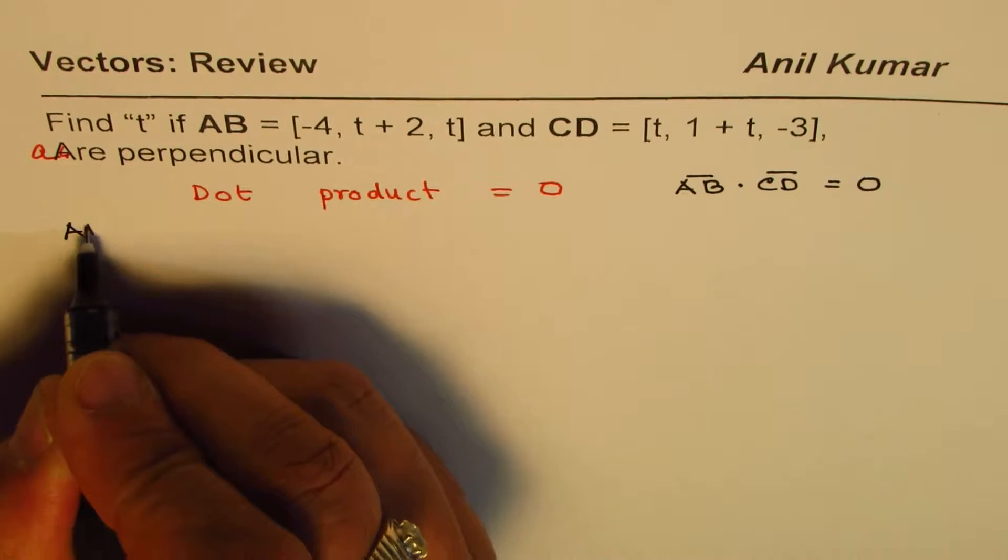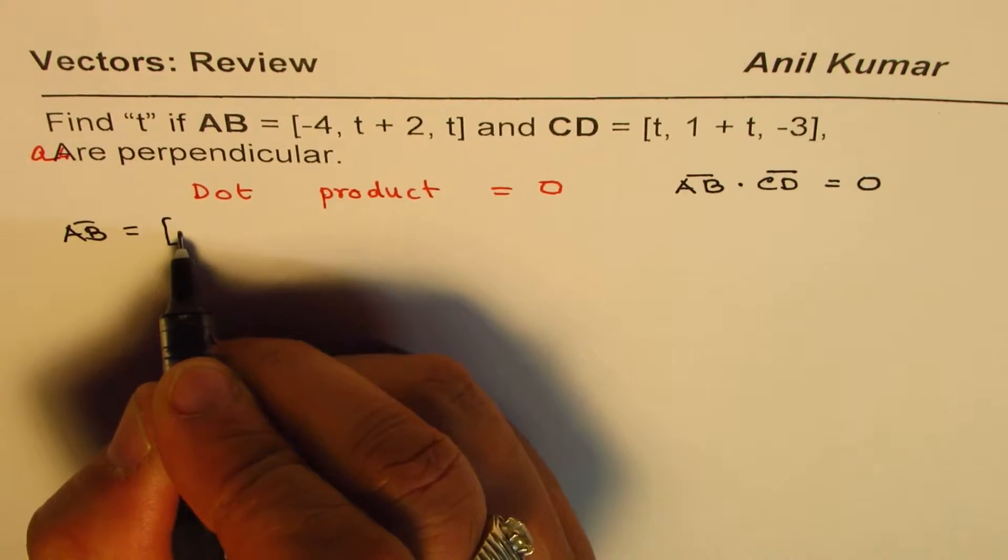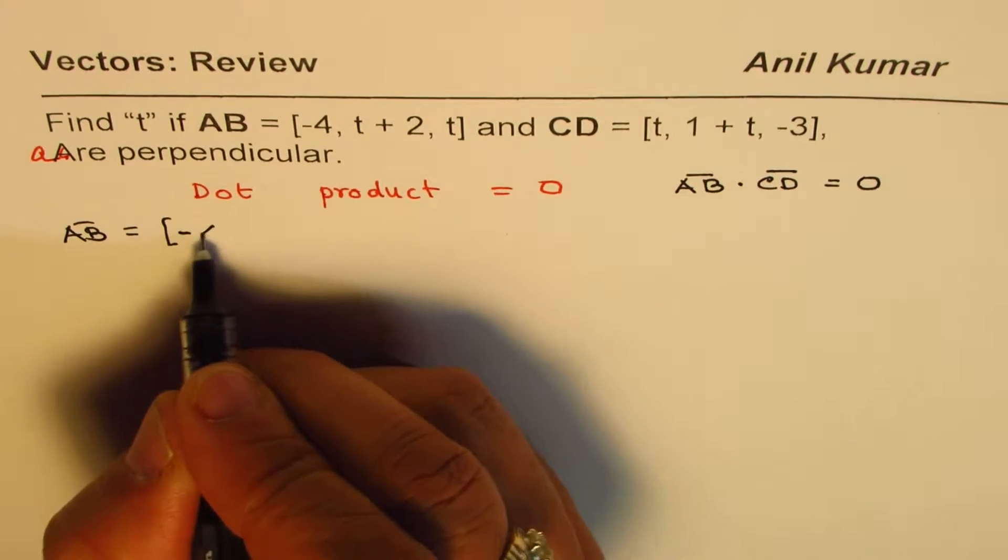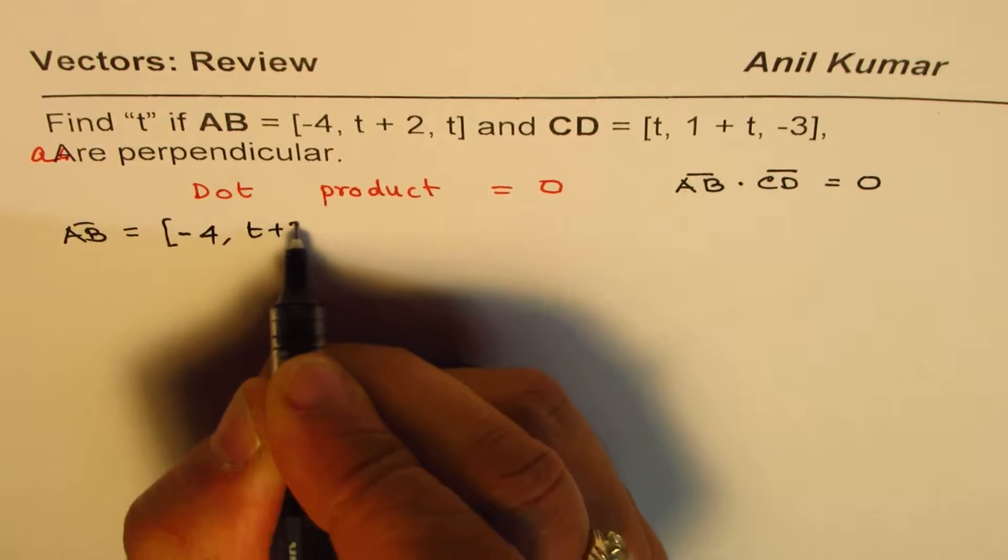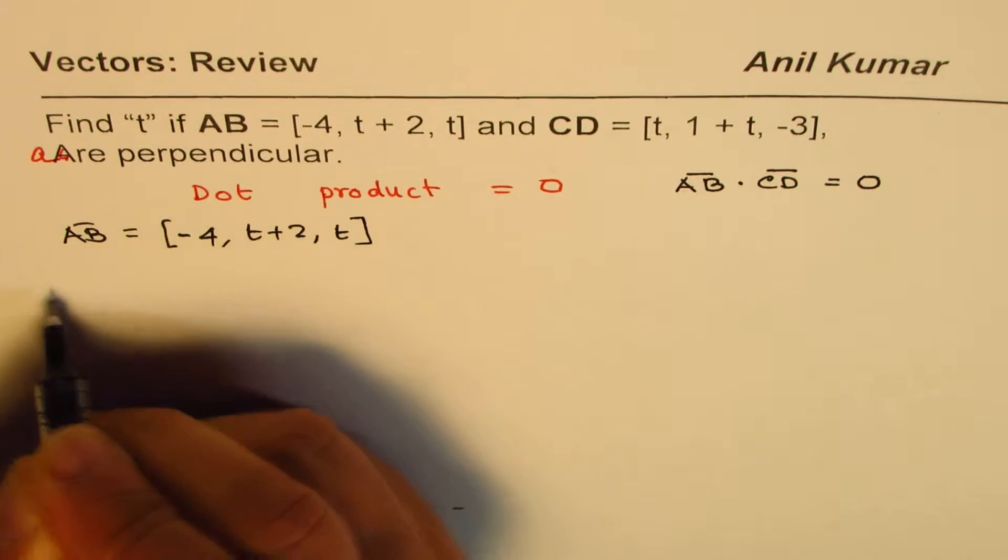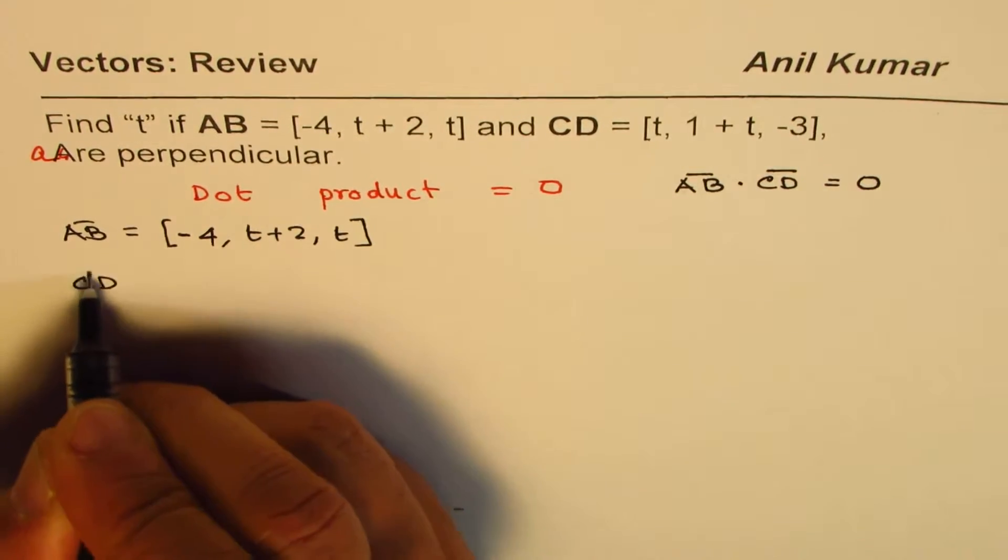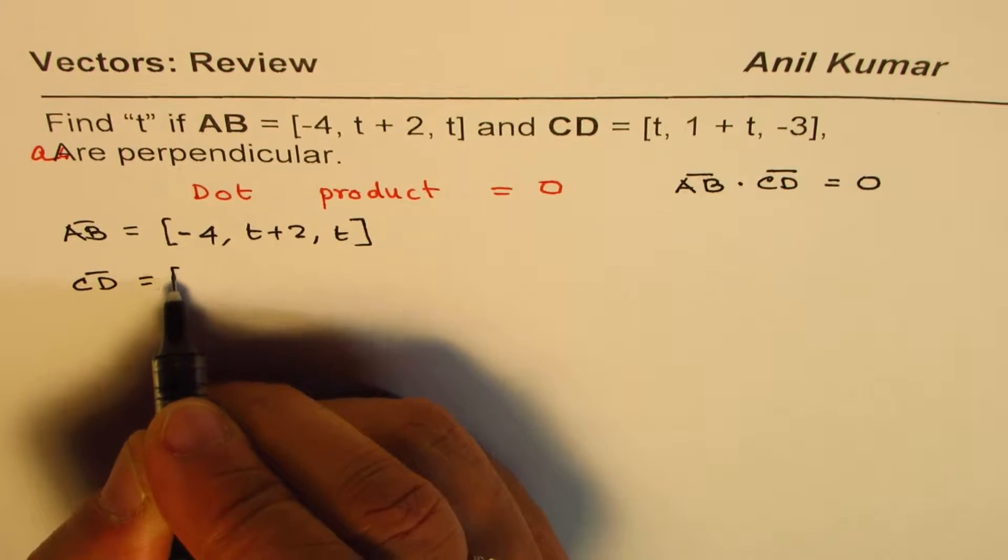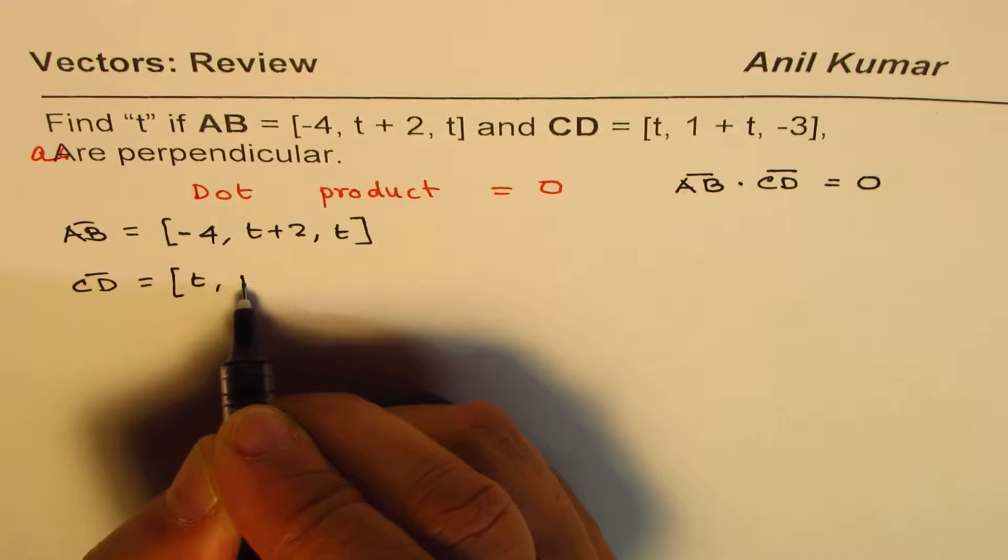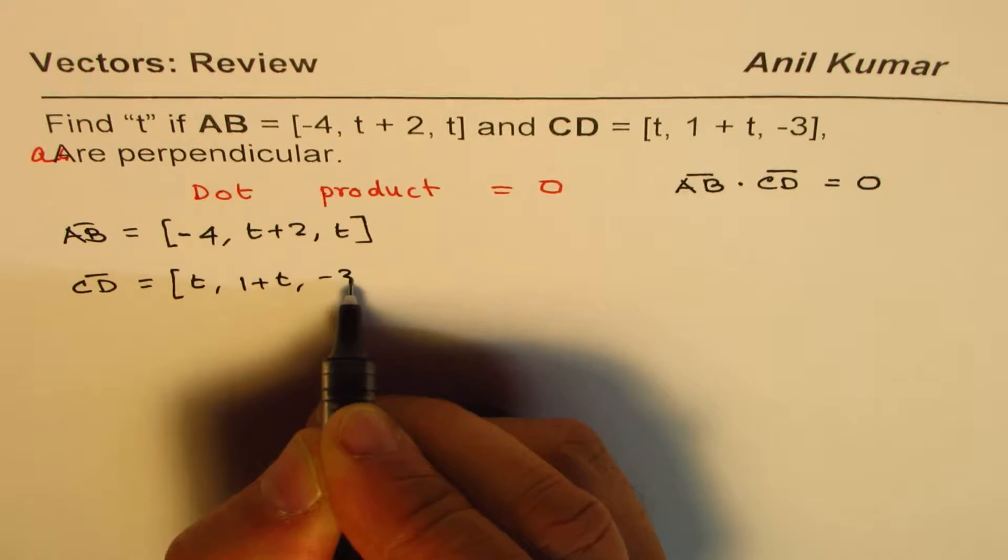Now, we are given the vector AB which is minus 4, t plus 2 and t, and vector CD equals t, 1 plus t and minus 3.